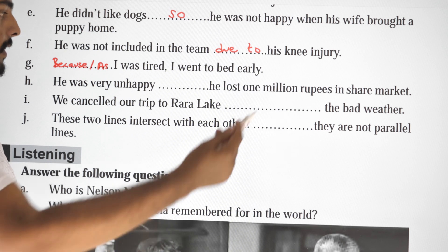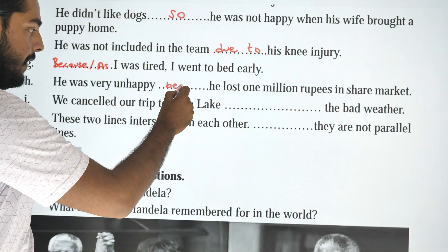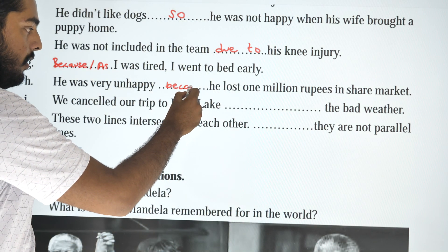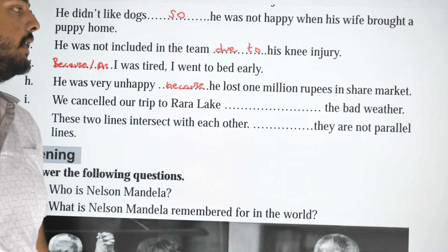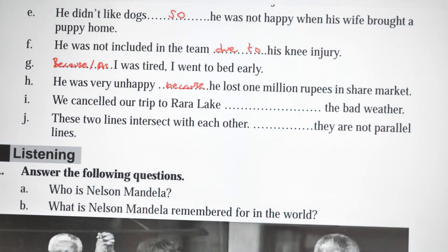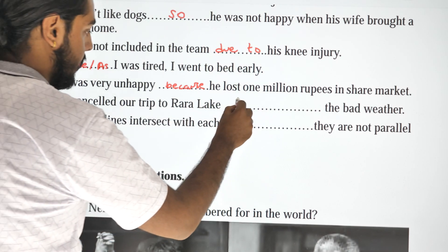He was very unhappy because he lost one million rupees in the share market. We cancelled our trip to Rara due to the bad weather.